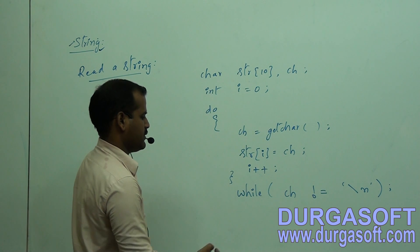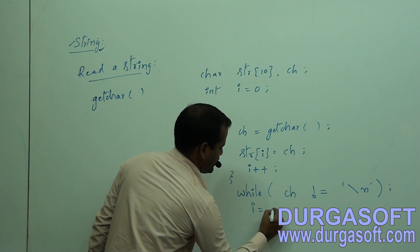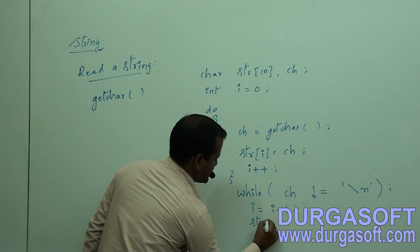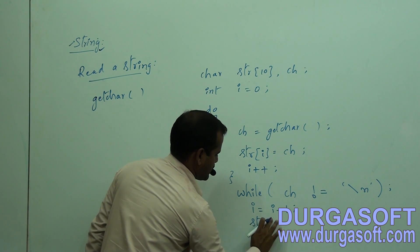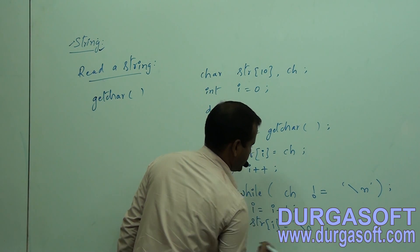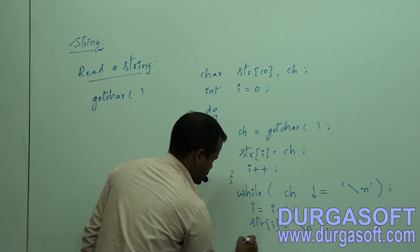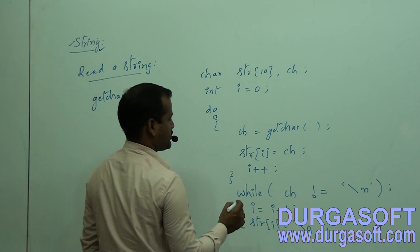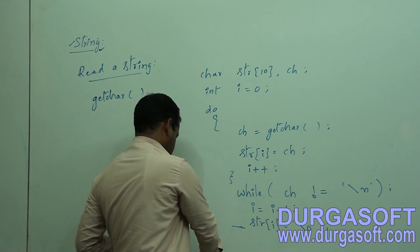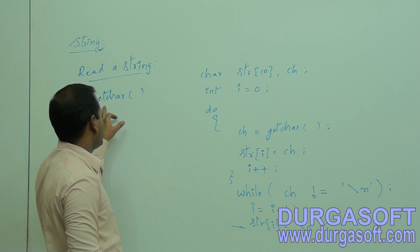This is the while condition part. The next statement after the while is i = i - 1, and string[i] is equal to the null character. We can print the string of course. We are discussing about reading a string. This is the code segment to read a string by using the getchar() function.